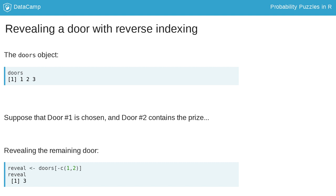Note that, in general, we can reference elements of the doors object by supplying either an explicit numeric index or a variable name. Here, we knew that door number one was the choice and door number two contained the prize, so we could supply the numbers one and two in the reverse indexing.